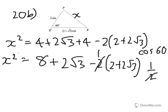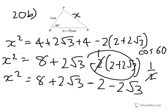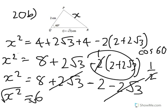So X² equals 8 minus 2, which equals 6. Taking the square root of both sides, X equals √6. Leave it in this form, because this is surd form.